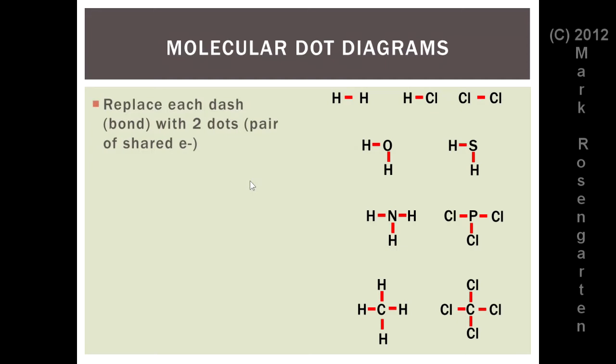For example, in H2, the single bond is replaced with two dots, each dot representing an unpaired electron being paired together with the other hydrogen. In hydrogen chloride, again, a single bond with two dots. Diatomic chlorine, replace the dash with two dots.